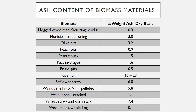Prune pits: 0.5% weight ash in dry basis. Rice hull: 16–23% weight ash in dry basis. Safflower straw: 6.0% weight ash in dry basis.